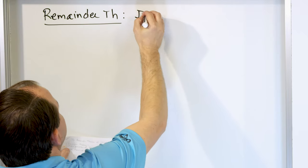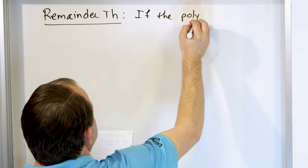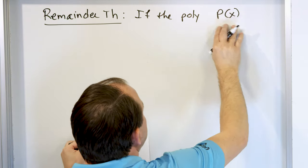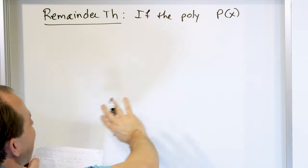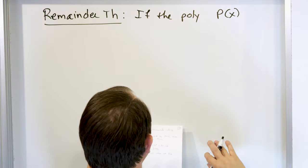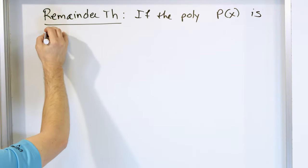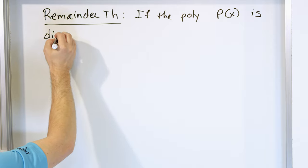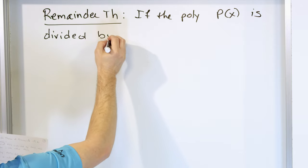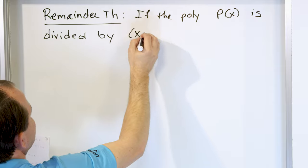If the polynomial — that's what 'poly' means — p of x, so I'm naming any polynomial p of x, it could be any polynomial you want, any degree — if that polynomial is divided by some quantity x minus c.